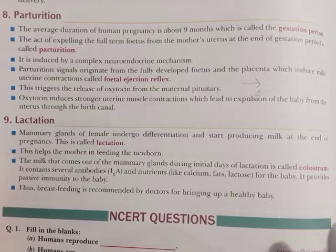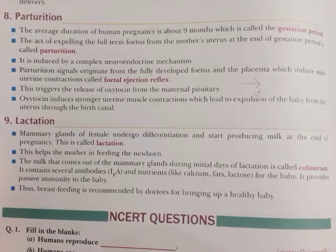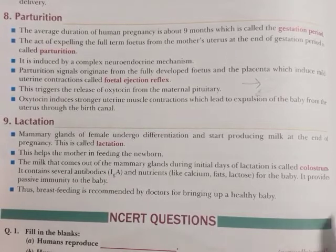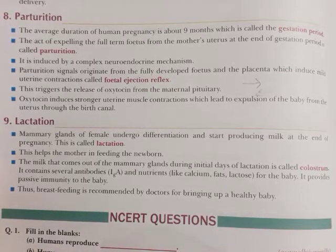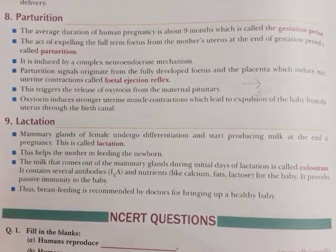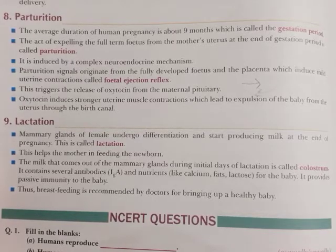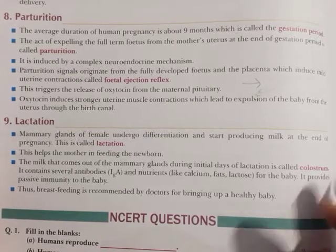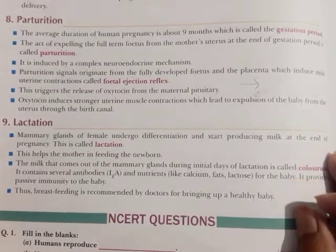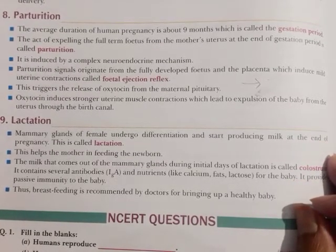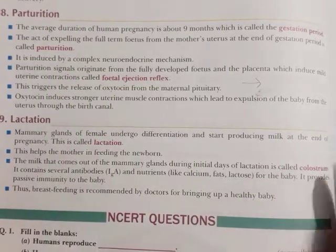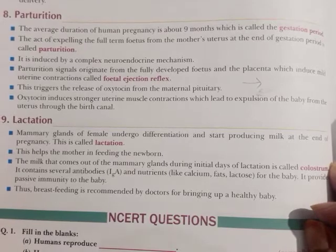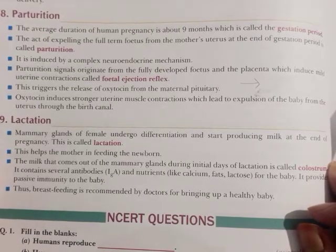This is the fetal ejection reflex. The signal is sent to the posterior pituitary, which releases oxytocin, increasing muscle contraction. As contraction becomes stronger and stronger, more oxytocin is released. This cycle continues, with oxytocin releasing more and more, and muscle contractions becoming progressively stronger, which leads to expulsion of the baby from the uterus through the birth canal.